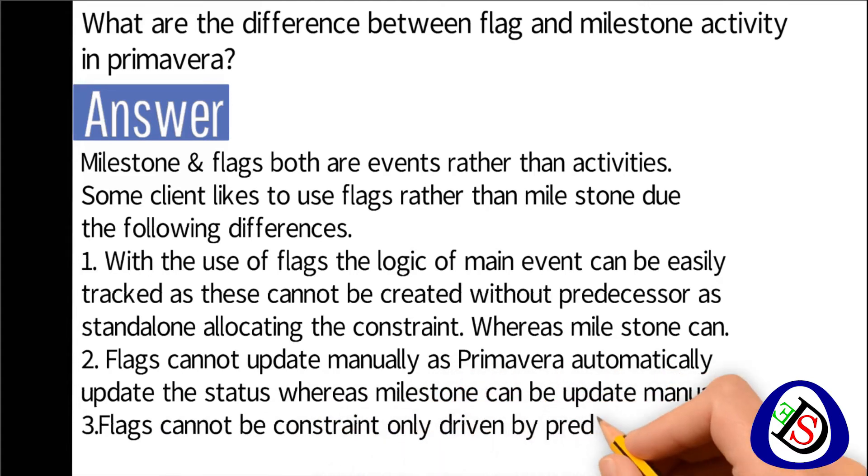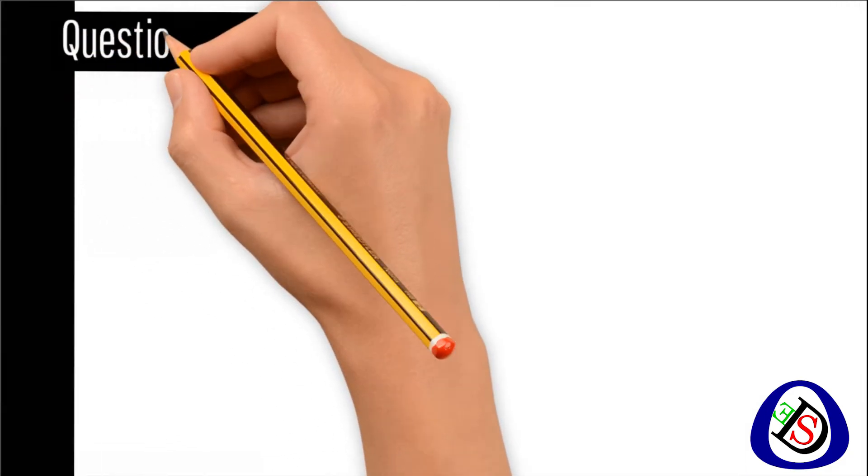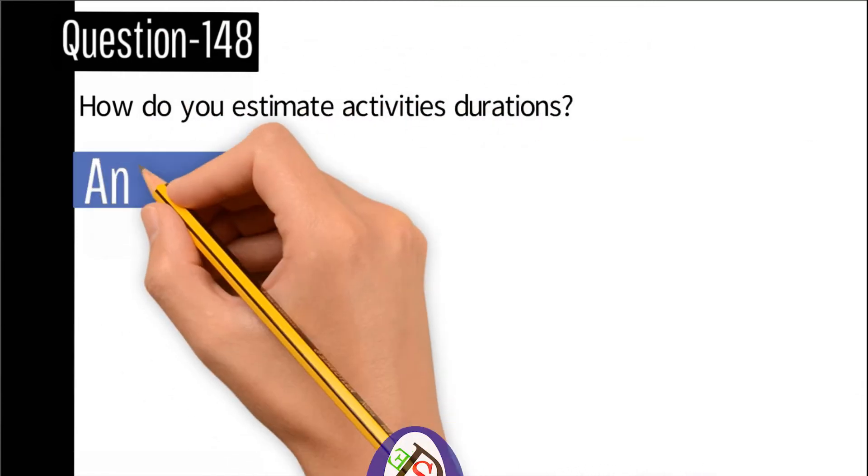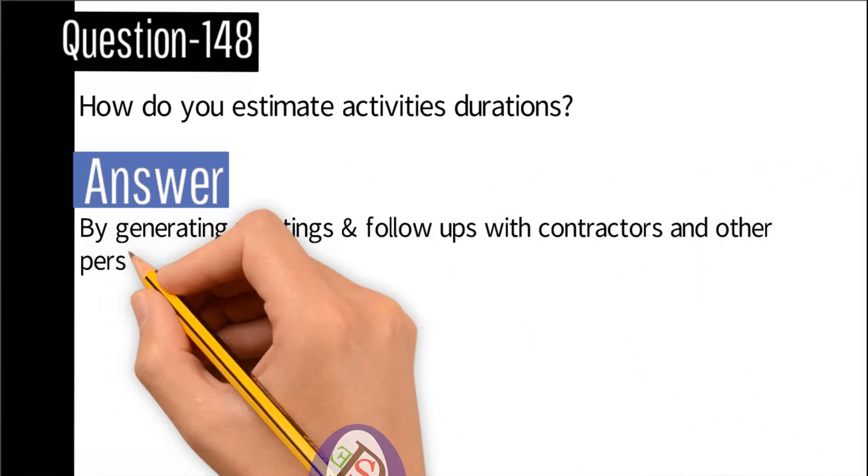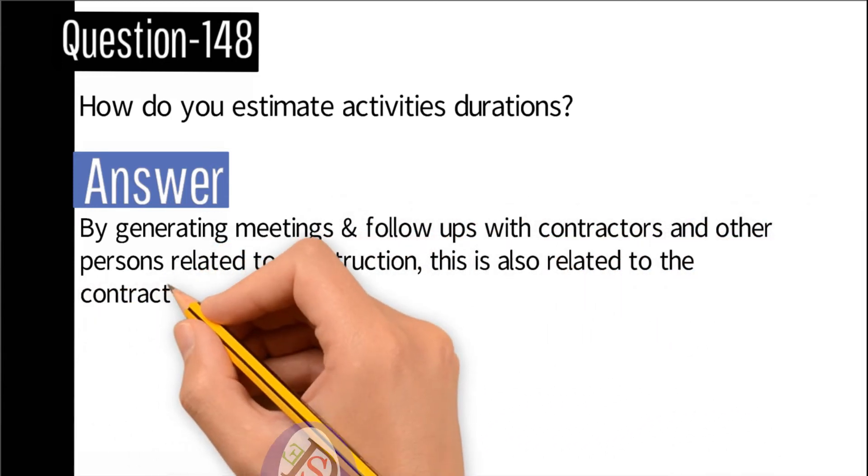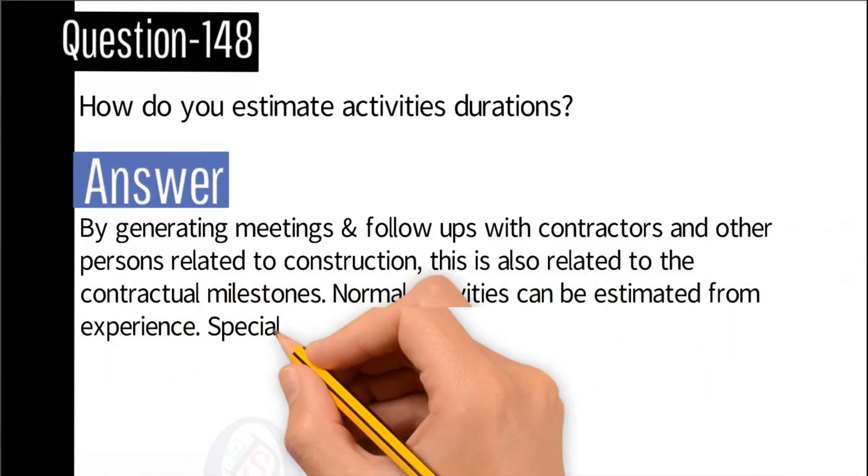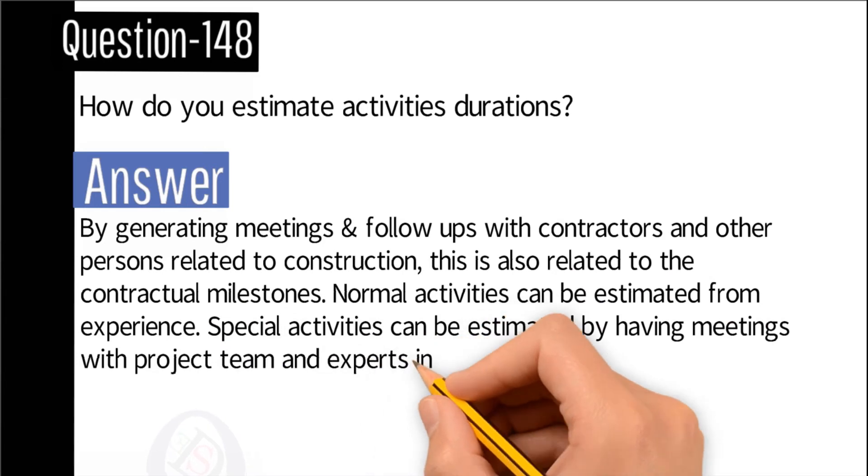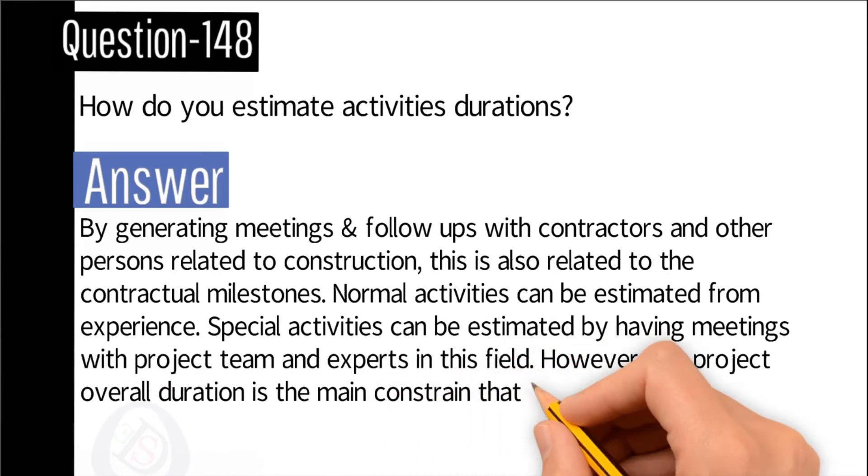Question number 148: How do you estimate activities durations? Answer: By generating meetings and follow-ups with the contractors and other persons related to construction. This is also related to the contractual milestones. Normal activities can be estimated from experience. Special activities can be estimated by having meetings with project team and experts in the field. However, the project overall duration is the main constraint that might affect all other estimations.